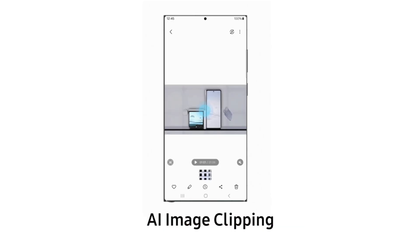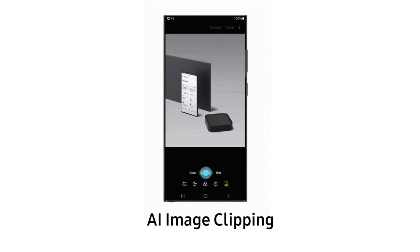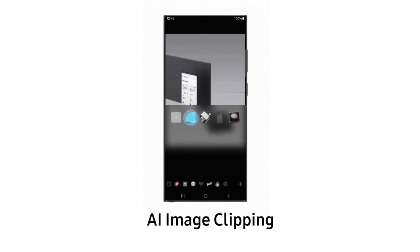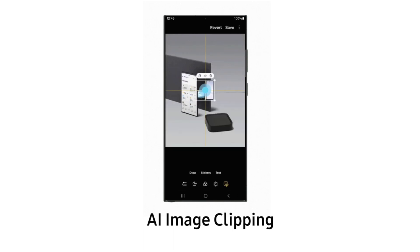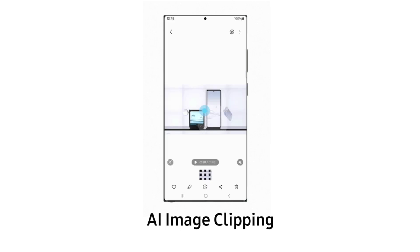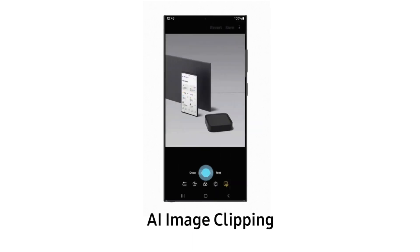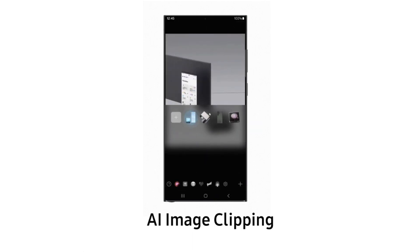The next impressive feature is AI image clipping, which lets you clip an object from a picture. You can instantly save this as a sticker that can later be added to other photos and videos whenever you want. A menu will pop up when you tap and hold on the object, giving you the option to copy or share the cutout and even save it as a sticker or an image.